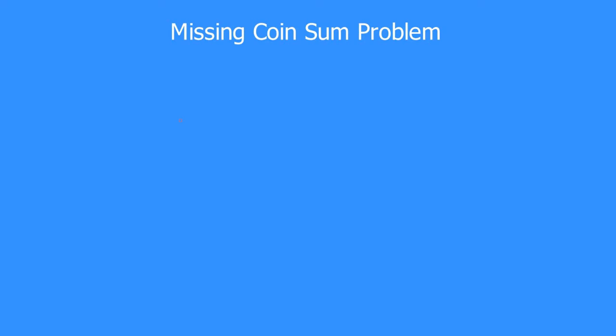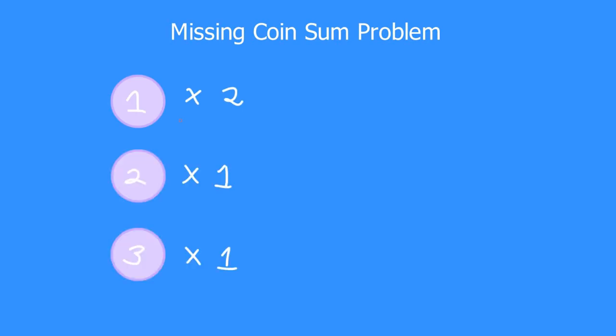Hello everyone. Today I am solving the missing coins problem. Suppose we have two coins of one rupee, one coin of two rupees, and one coin of three rupees. What is the minimum amount which cannot be found by using a subset of these coins?